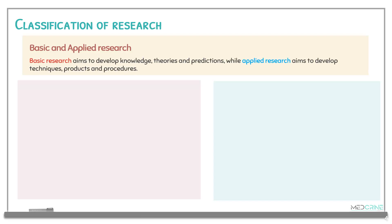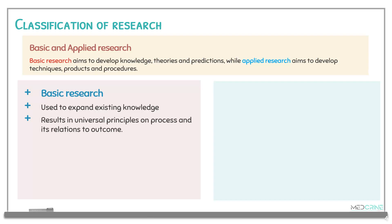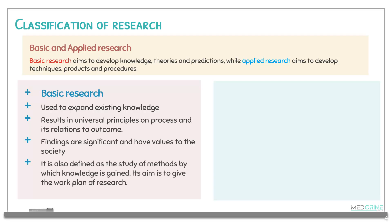A basic research aims to develop knowledge, theory, or a prediction, while applied research aims to develop a technique, a product, or a procedure to address a given problem. Basic research is used to expand existing knowledge, results in universal principles relating processes to given outcomes, and its findings are mutually significant and have value to society. These are types of research used to expand already existing knowledge.